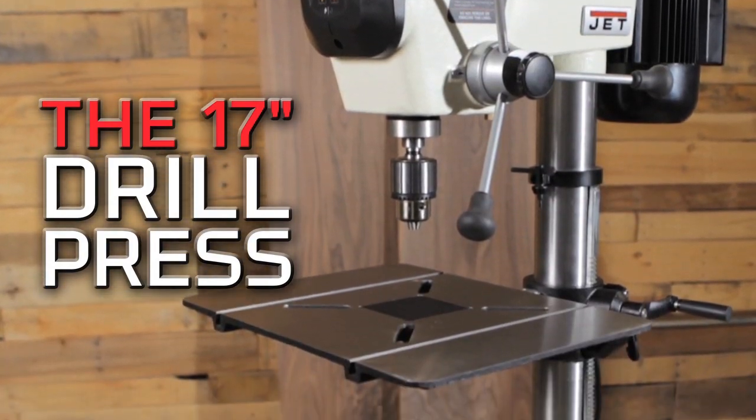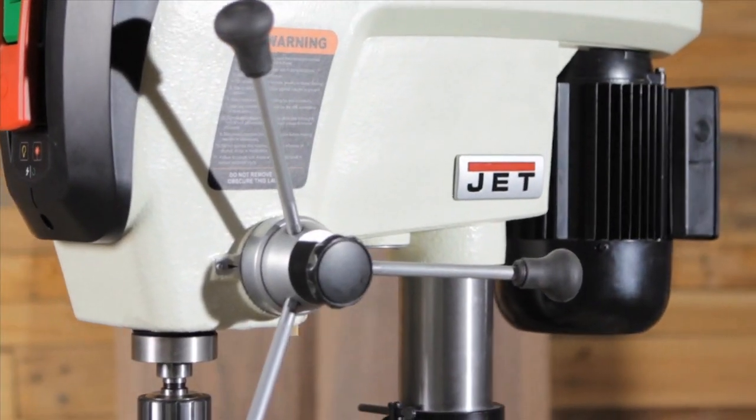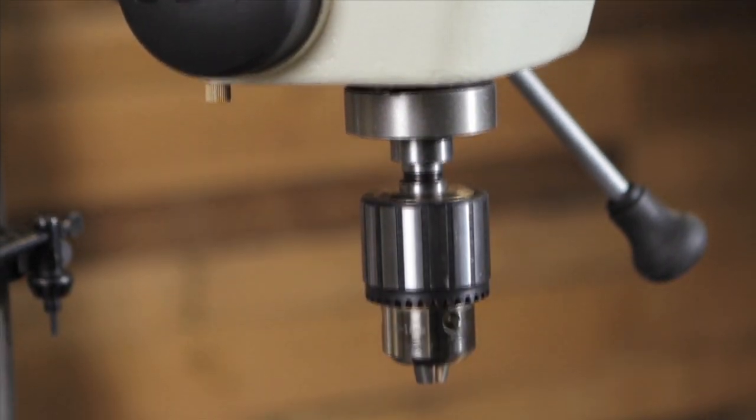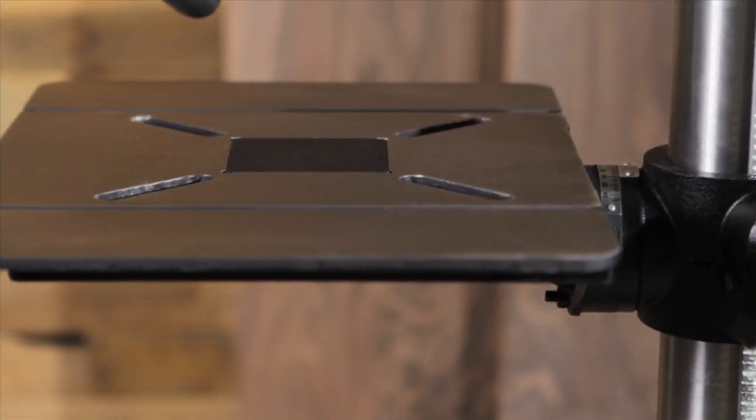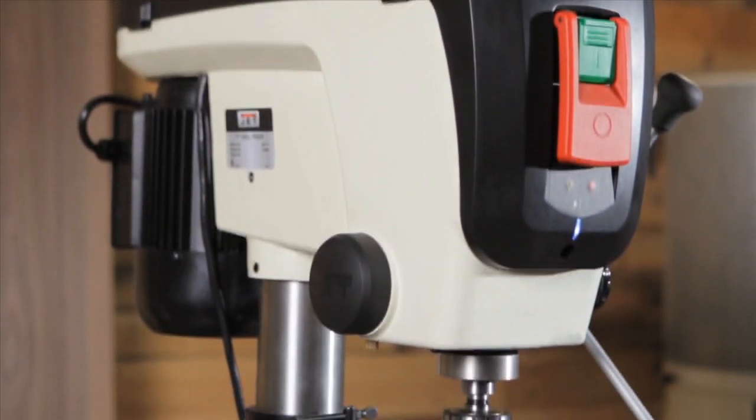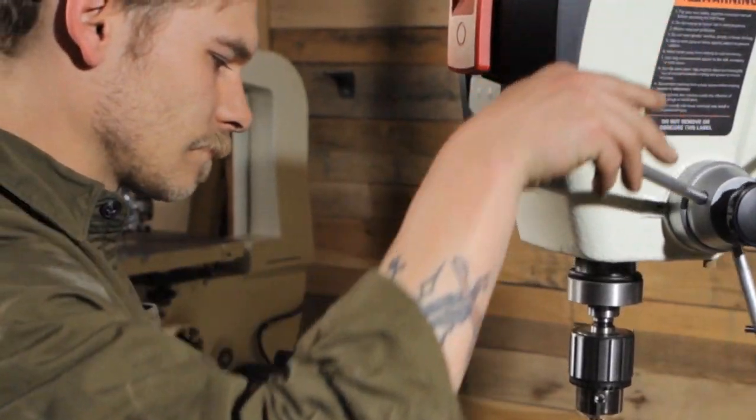This drill press includes a full 5 inch spindle travel, quick and easy speed changes, and a poly V belt drive. And it all adds up to a design that performs.